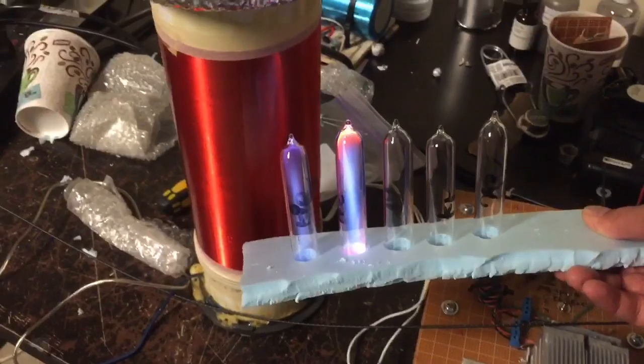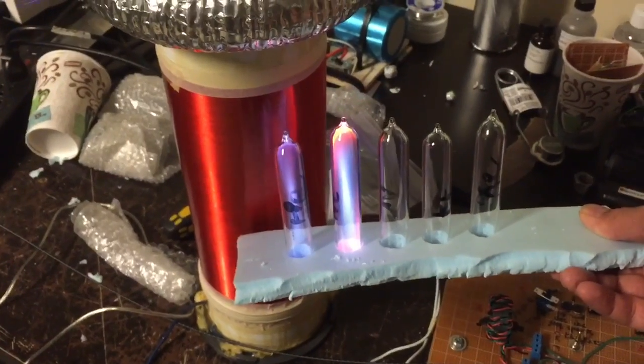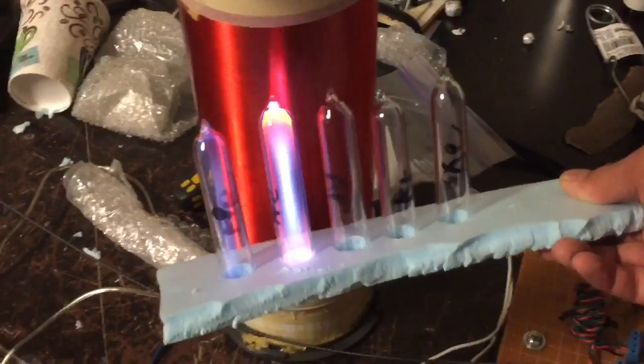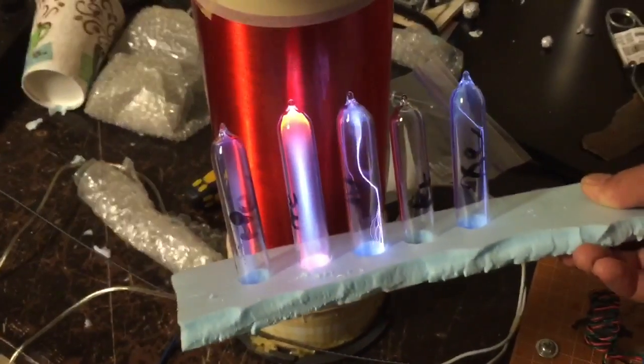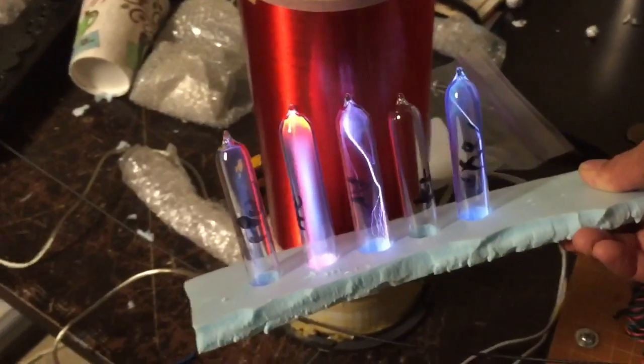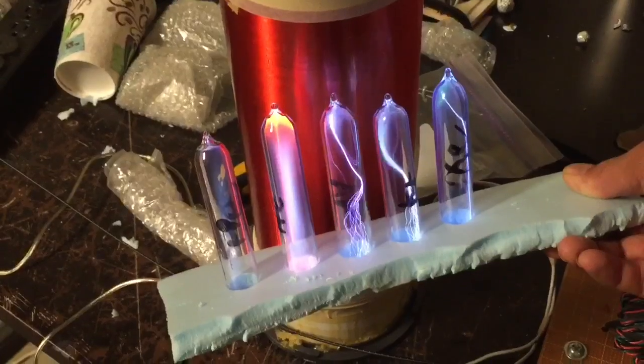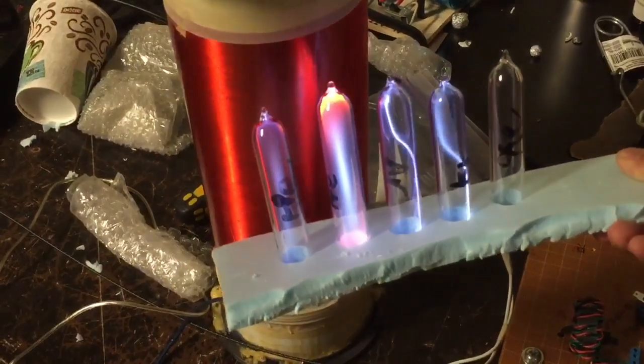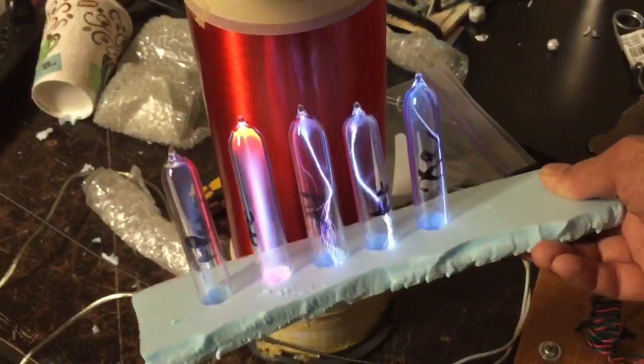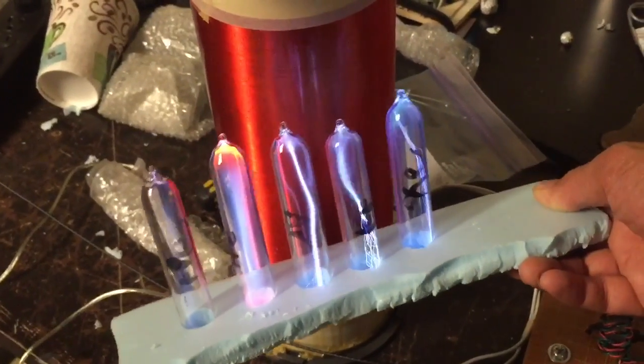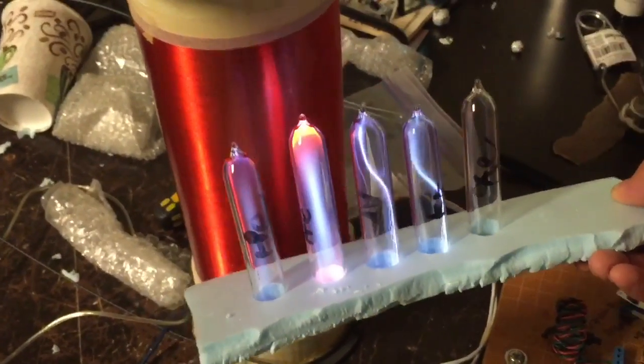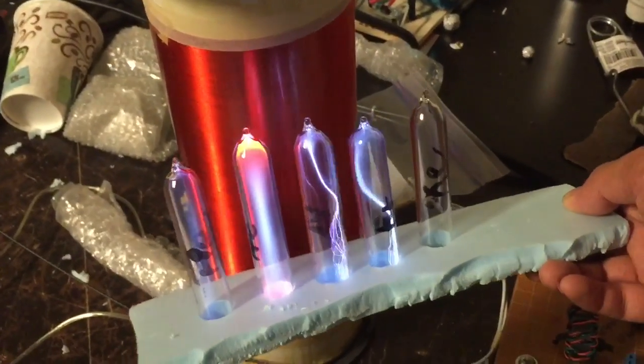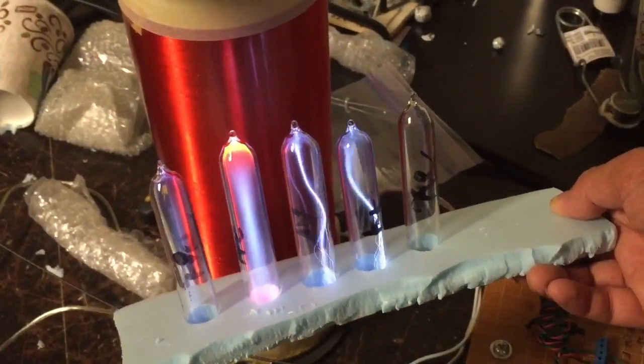So the first one that you see is helium, then you've got neon, then argon, then krypton, and last of all is xenon. So all tubes are lighting up as you can see here, and each one has its own characteristic appearance. The neon is the most colorful and it's the one that ionizes at the lowest voltage.